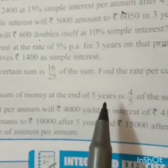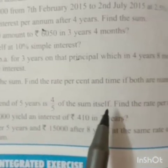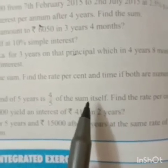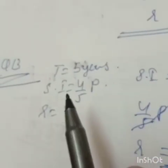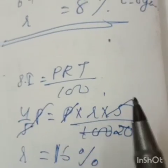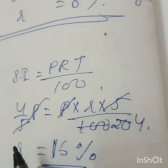Same type of question — Question number 13: A sum of money at the end of 5 years, the simple interest is 4 by 5 of the sum itself. Whatever the sum, 4 by 5 of the sum is the interest. Find the rate percentage. Time is 5 years, simple interest equals 4 by 5 of the sum.